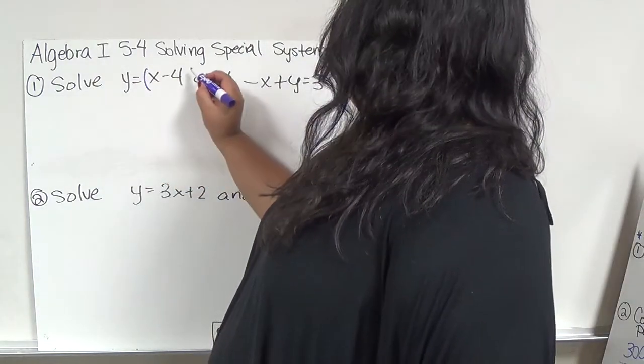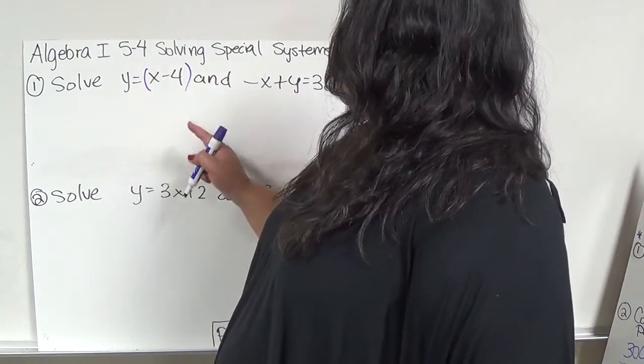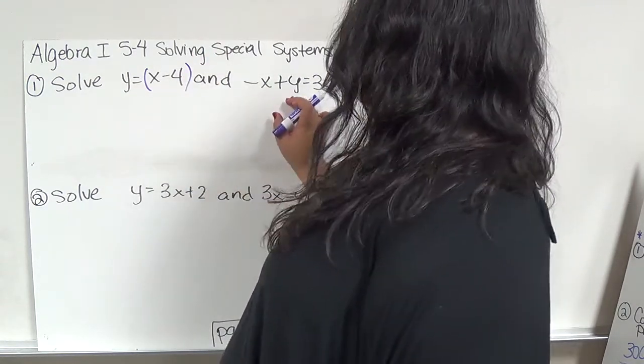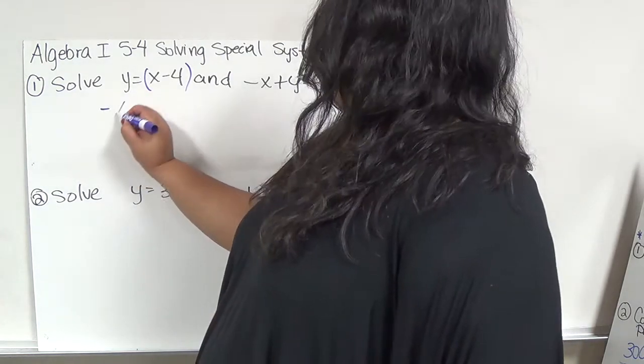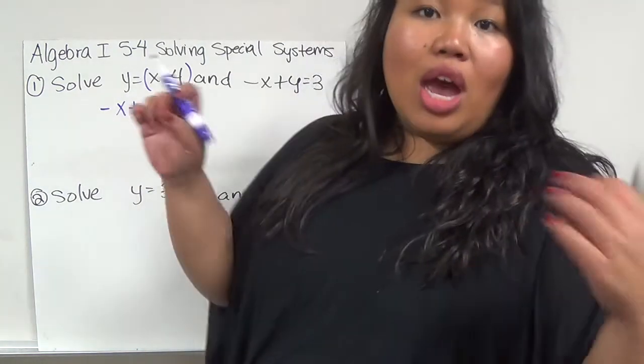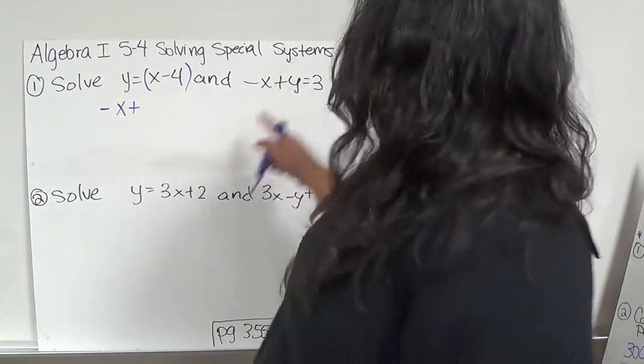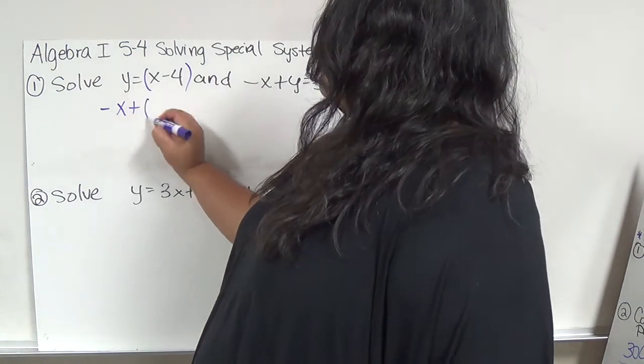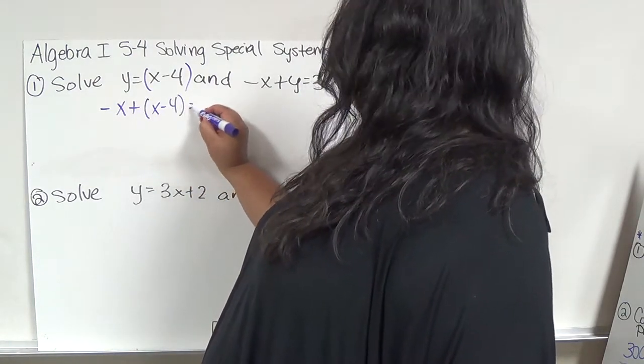Remember, substitution is the one where I isolate a variable, which is already isolated, and I put the other side in a bubble and replace it here. So I'm going to do negative x plus this entire bubble, and I'm not dividing it by y or multiplying it by y or putting it next to y—I'm replacing it completely with y: x-4 equals 3.